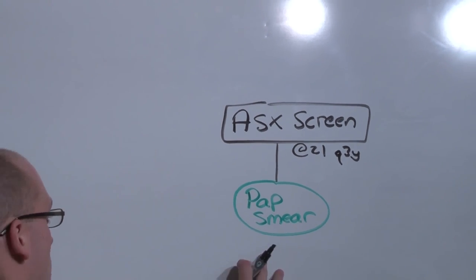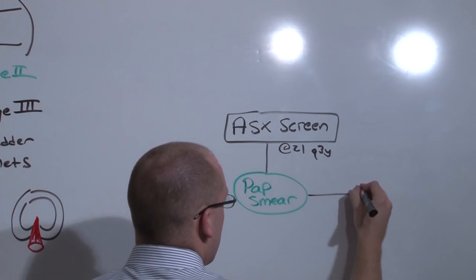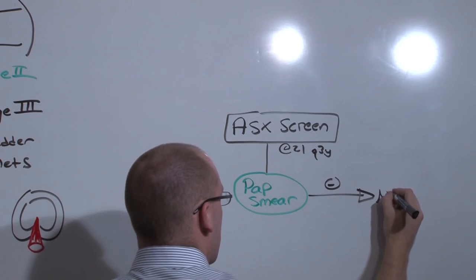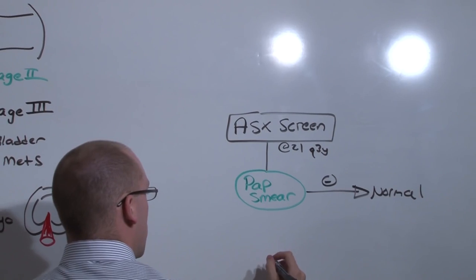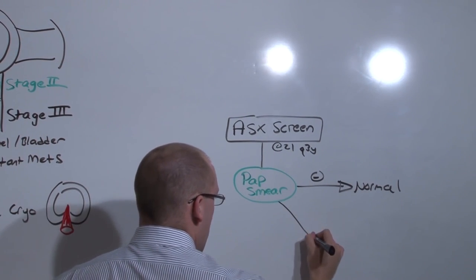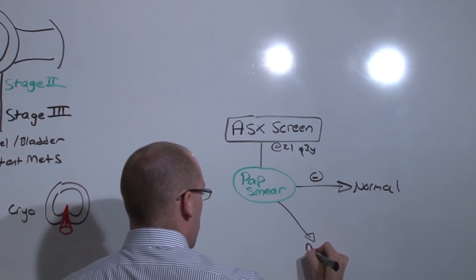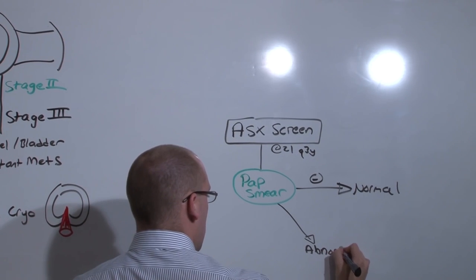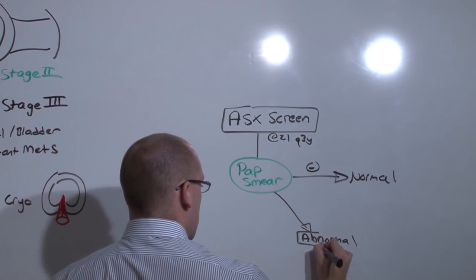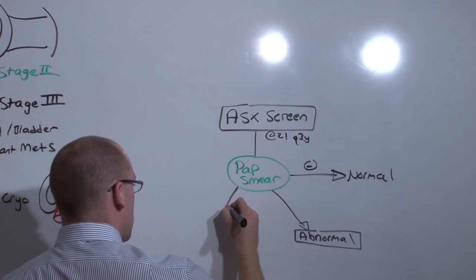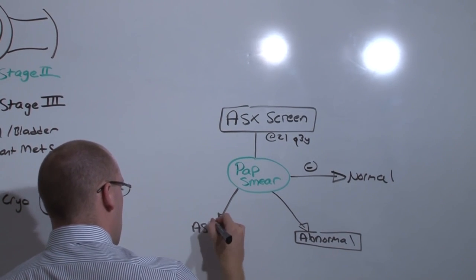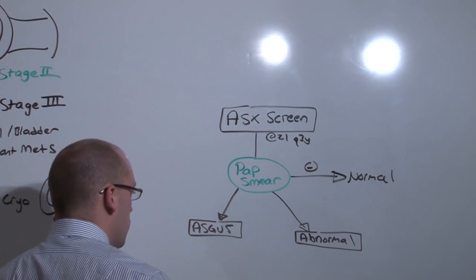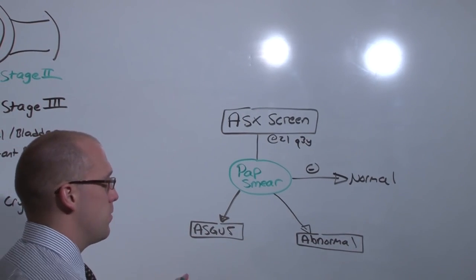If you have a pap smear, it can be normal and she just goes on her normal routine screen. It can be frankly abnormal, requiring additional investigation. Or it can be one of those "I don't know," atypical, but you're not really sure how significant it is.